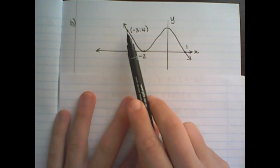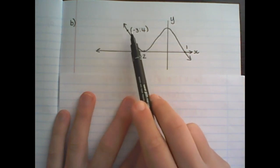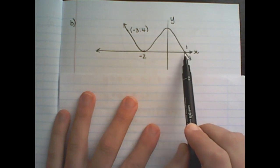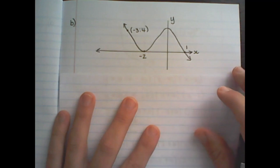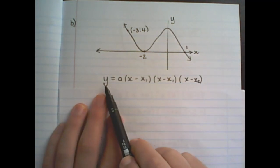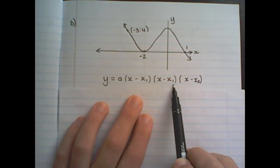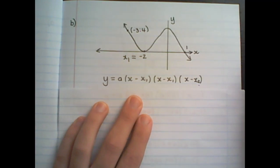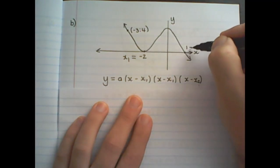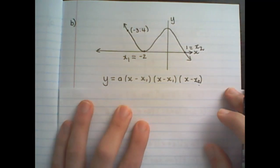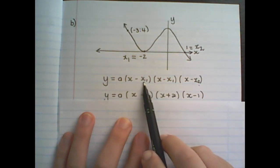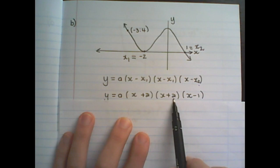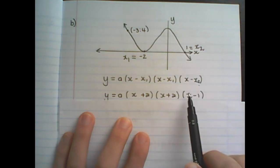In our second example, we are given negative 3 and 4 as a coordinate on the function, and we are given the turning point of negative 2, and that 1 intercepts the x-axis. The equation I would use is y equals a times x minus x1 times x minus x1 times x minus x2. The negative 2 value represents x1 because it's the turning point, and 1 represents x2. So I substitute x1 with negative 2: it's x minus negative 2, which becomes x plus 2 — same for the next bracket. The last bracket gives x minus 1.